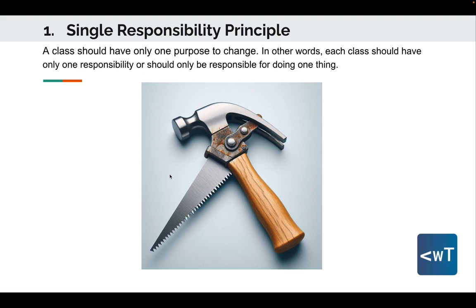But what if that same hammer suddenly had a sharp corner for sawing, like the one you see on the screen? It would be confusing and awkward to use. Similarly in coding, if a class that is meant for one job starts doing another unrelated job, it can make your code confusing and complicated to work with. That's why we stick to the Single Responsibility Principle — keeping each class focused on its job, just like using a hammer for hammering and a saw for sawing.